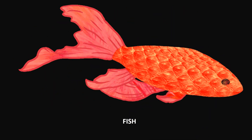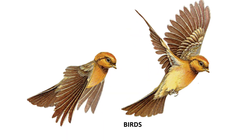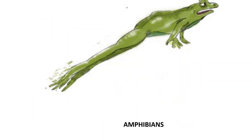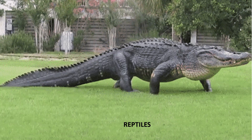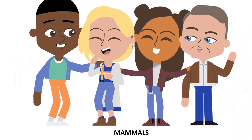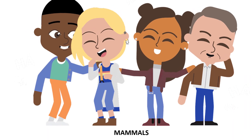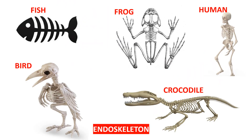Animals like fish, birds, amphibians, reptiles, and mammals have an endoskeleton. They have a skeleton inside their body.